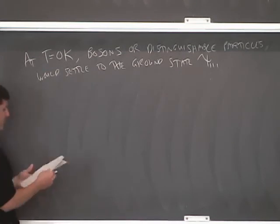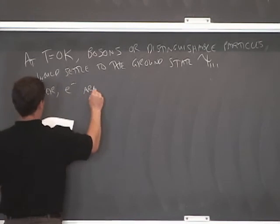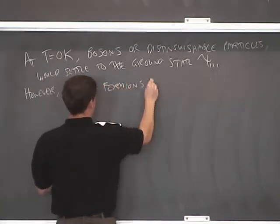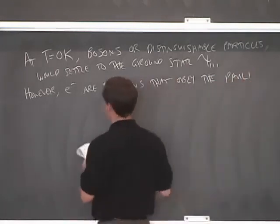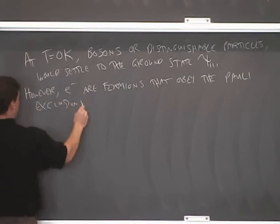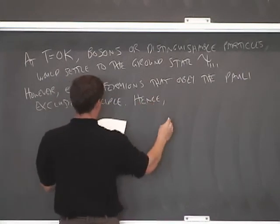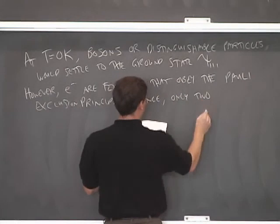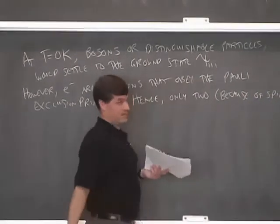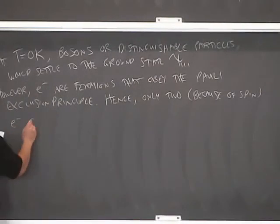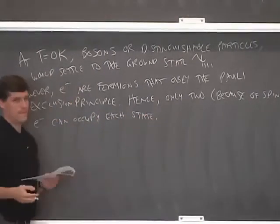However, electrons are fermions that obey the Pauli exclusion principle. And as a result, only two electrons can occupy each state. And there's two because the Schrodinger equation does not include spin. And we now know that there's two possible values of spin for a fermion.